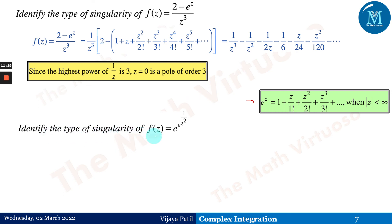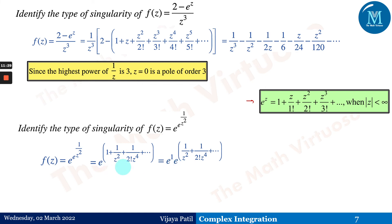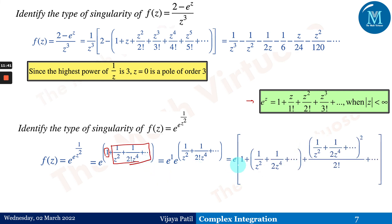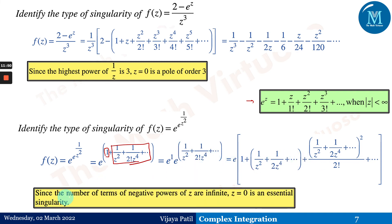Identify the type of singularity of f(z) = e^(e^(1/z²)). Writing e^(e^(1/z²)) = e · e^(1/z²) and expanding e^(1/z²) as a series, we observe that the number of terms with negative powers of z is infinite. Therefore z = 0 is an essential singularity.